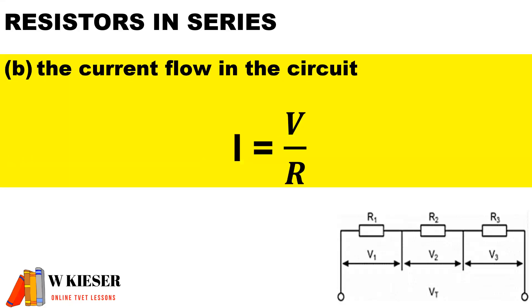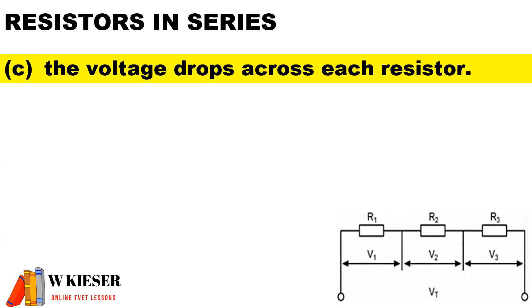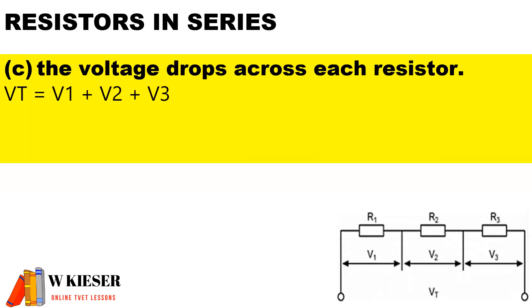To calculate the total current flow in a series circuit we use Ohm's Law: V total divided by R total. Therefore the current flowing throughout the entire circuit is 3.667 amps. Because it's a series circuit, voltage is divided, so there will be a volt drop across each resistor, and the sum of the volt drops is equal to the supply voltage.